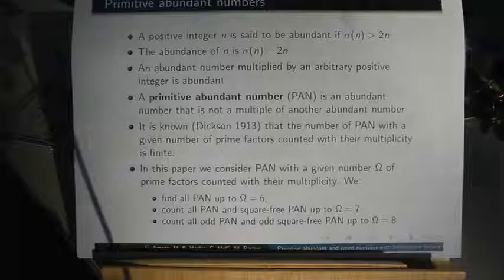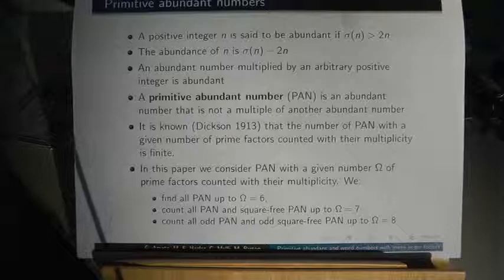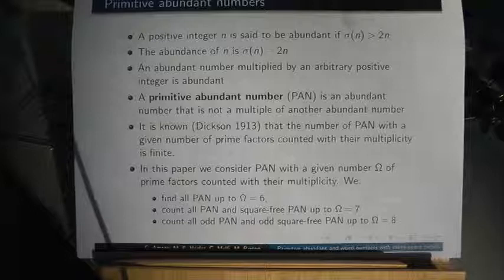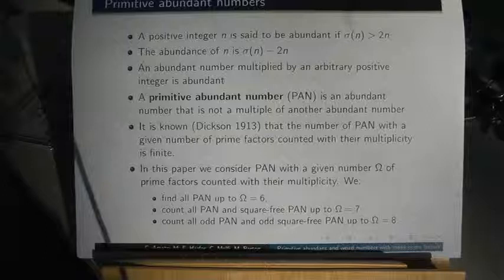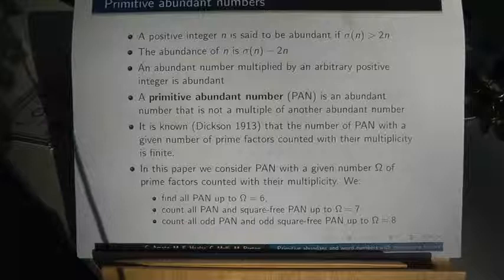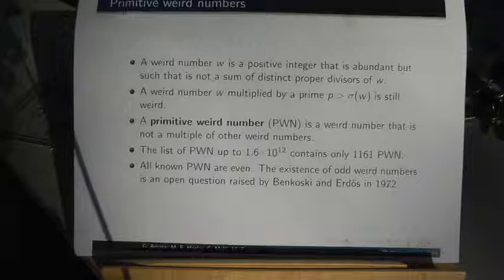We count all primitive abundant numbers and square-free primitive abundant numbers up to 7 prime factors counted with their multiplicity. These results appear to be new.